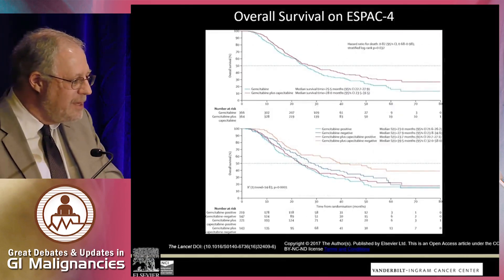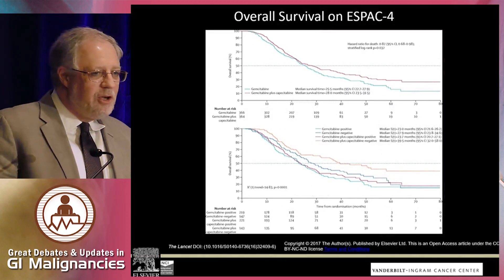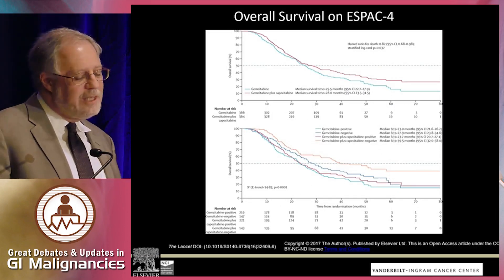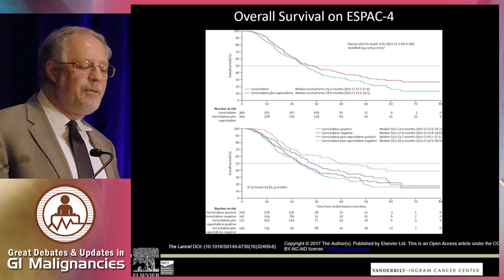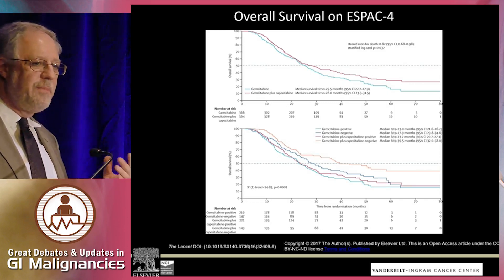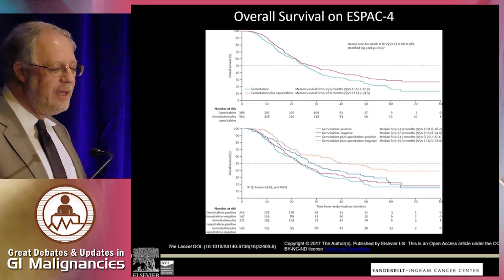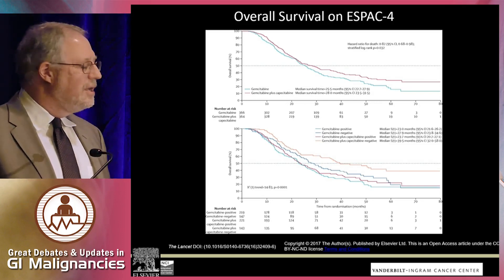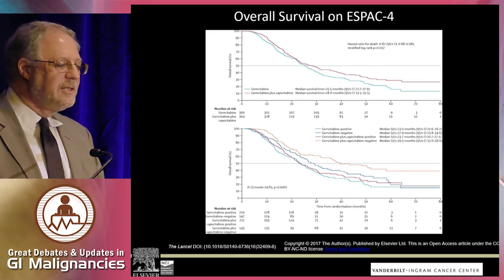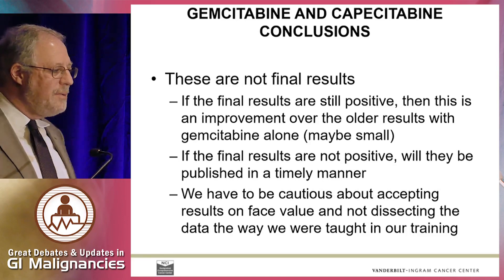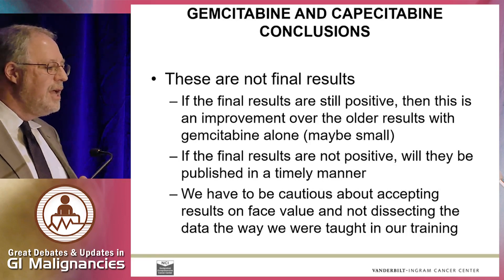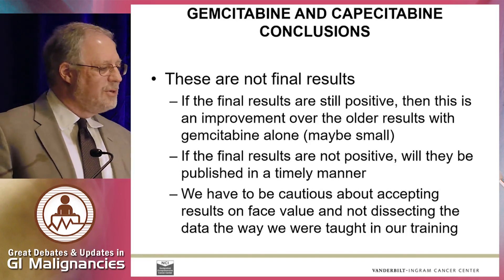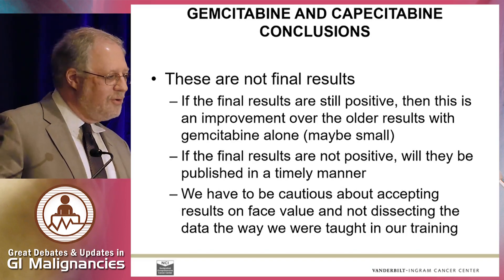And this, of course, is the data, which does show GemCape favored, but as you'll note, as in all trials, as you get further down the line, your Kaplan-Meier curve — which is a curve based on what you're guessing is going to happen — is based on very few patients towards the end of the trial, because it's still an early analysis. I think that's very important. So GemCape conclusion — these aren't, in my mind, the final results. I think they need to get to the final results, because of what I'm going to show you in a moment.